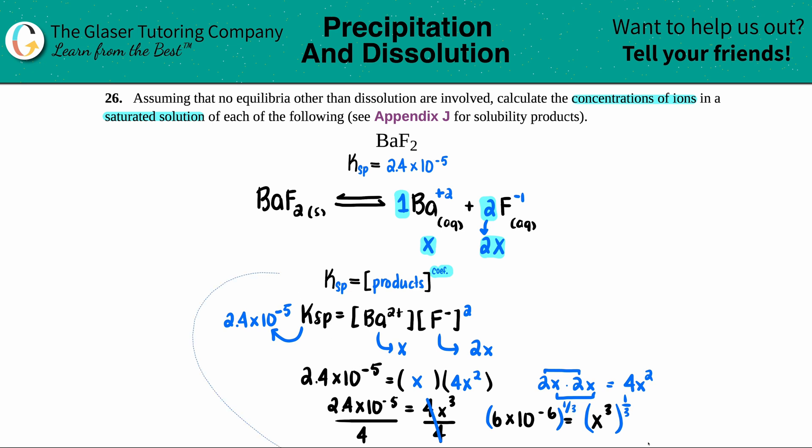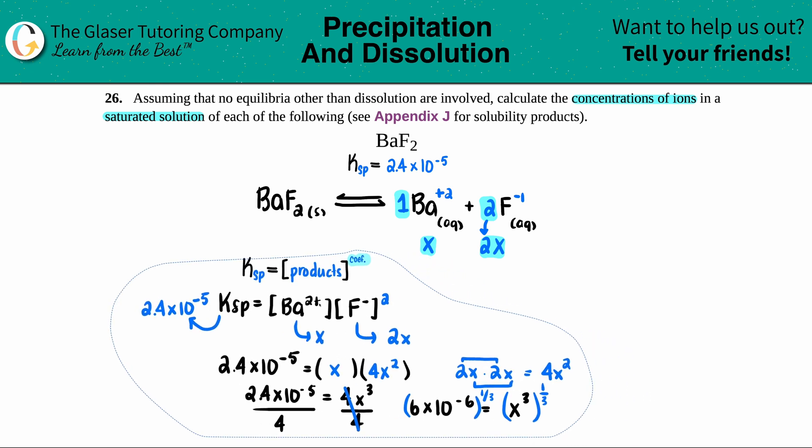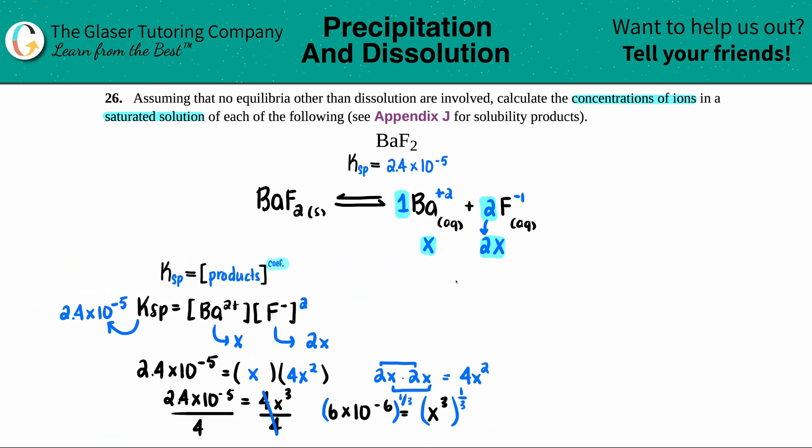And now maybe if I can, I'm just going to pull all of this over just so that I have a little bit of room for my X value. This will cancel. And we're just going to raise that number to the 1 third. And I get 1.8 times 10 to the negative second. And that's molarity.